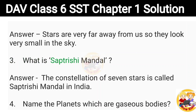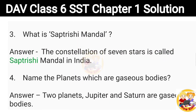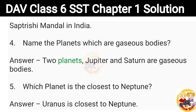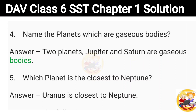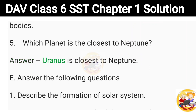3. What is Saptrishi Mandel? Answer: The constellation of seven stars is called Saptrishi Mandel in India. 4. Name the planets which are gaseous bodies. Answer: Two planets, Jupiter and Saturn are gaseous bodies. 5. Which planet is the closest to Neptune? Answer: Uranus is closest to Neptune.